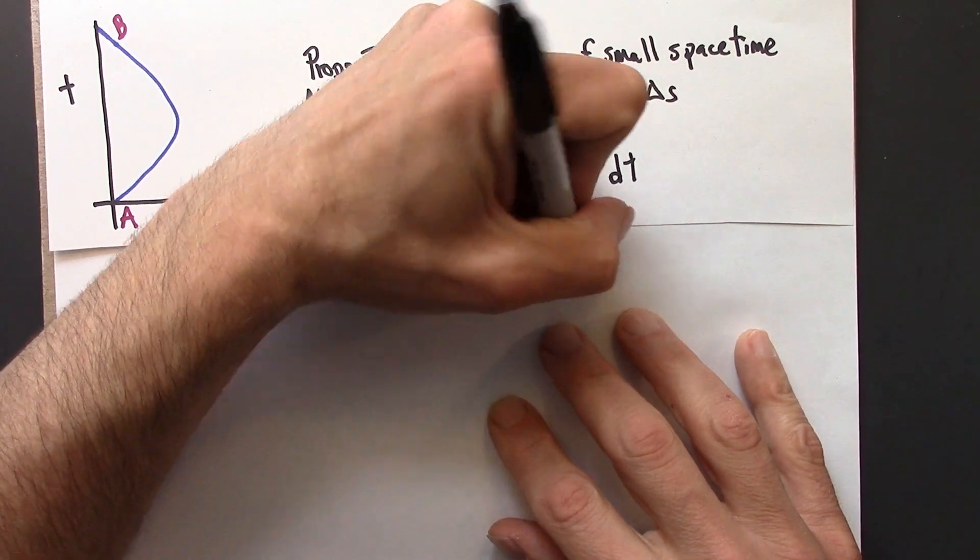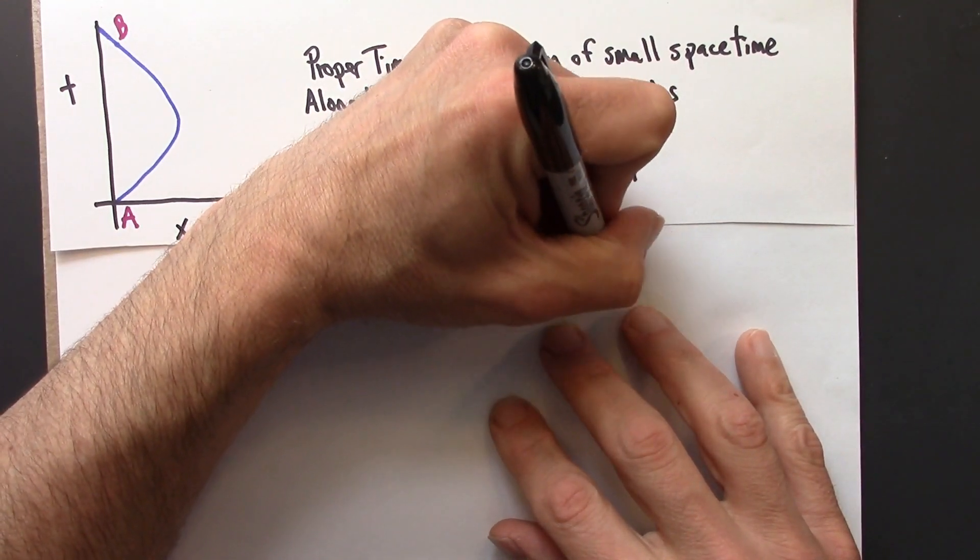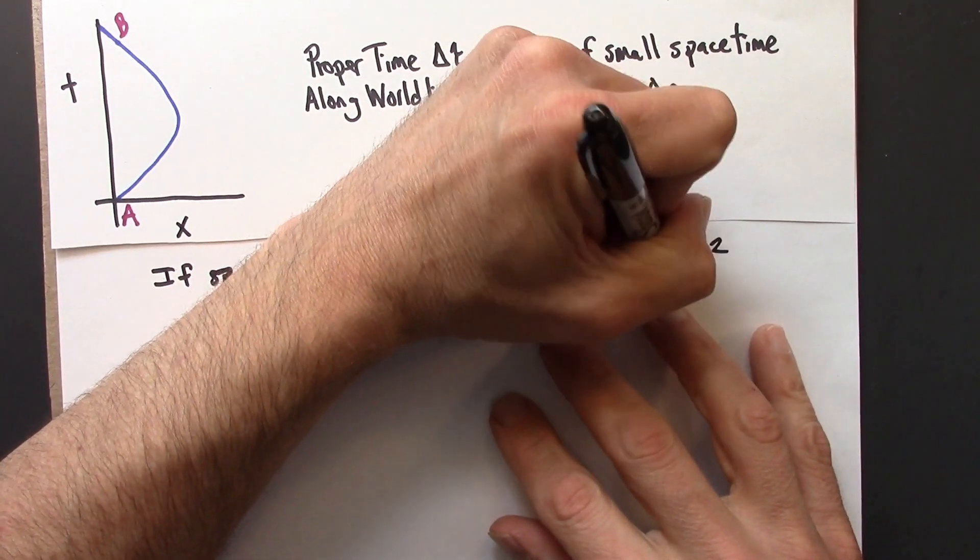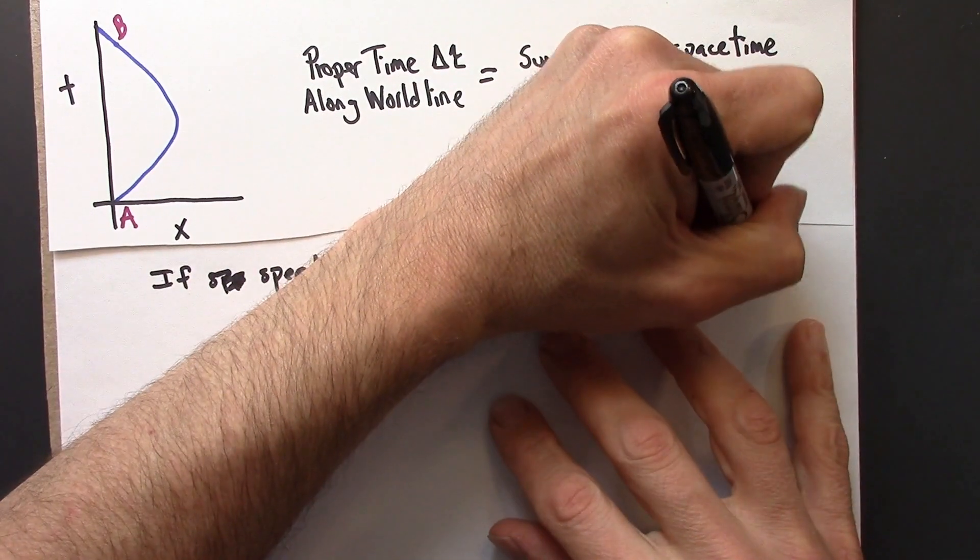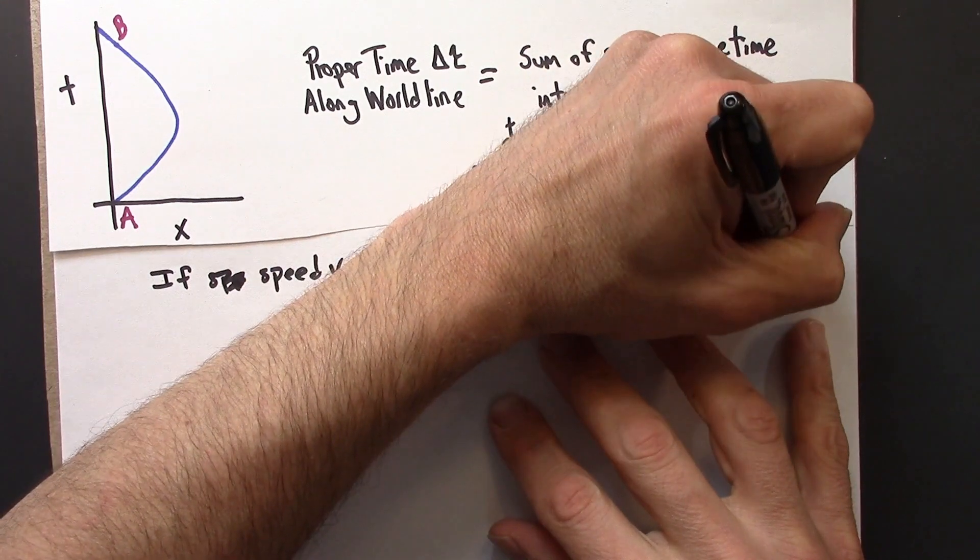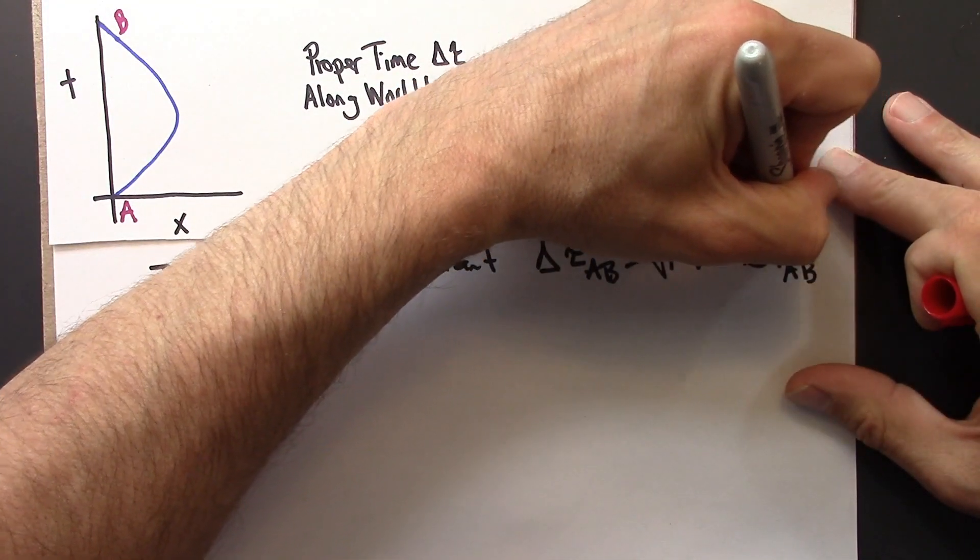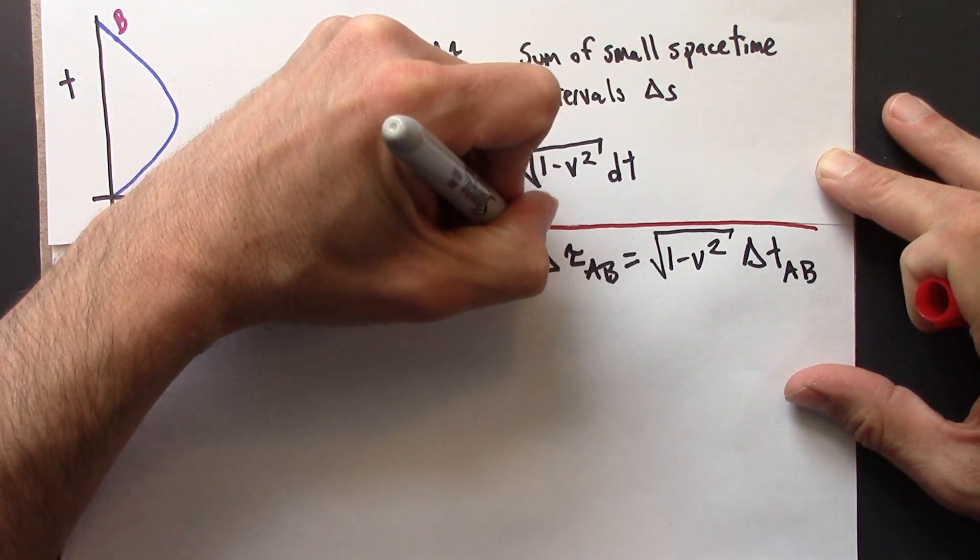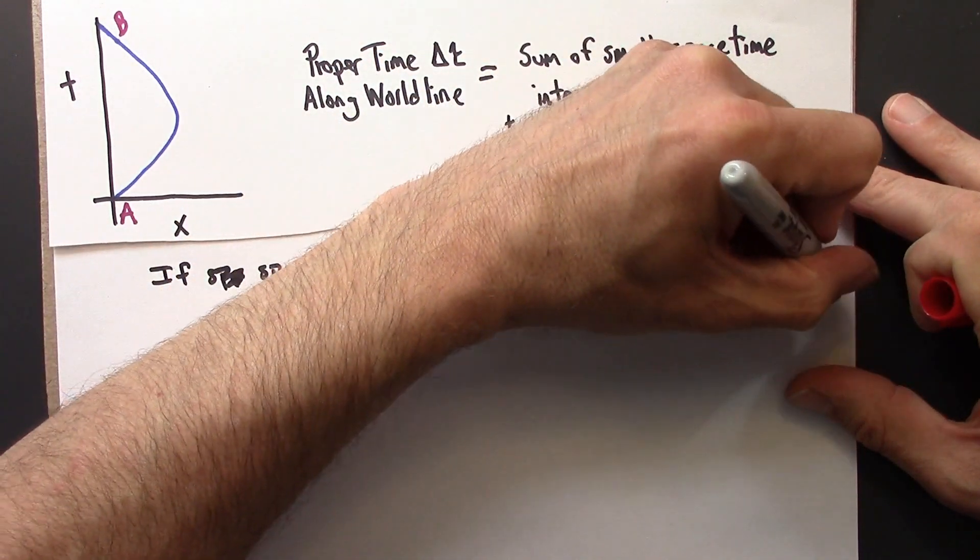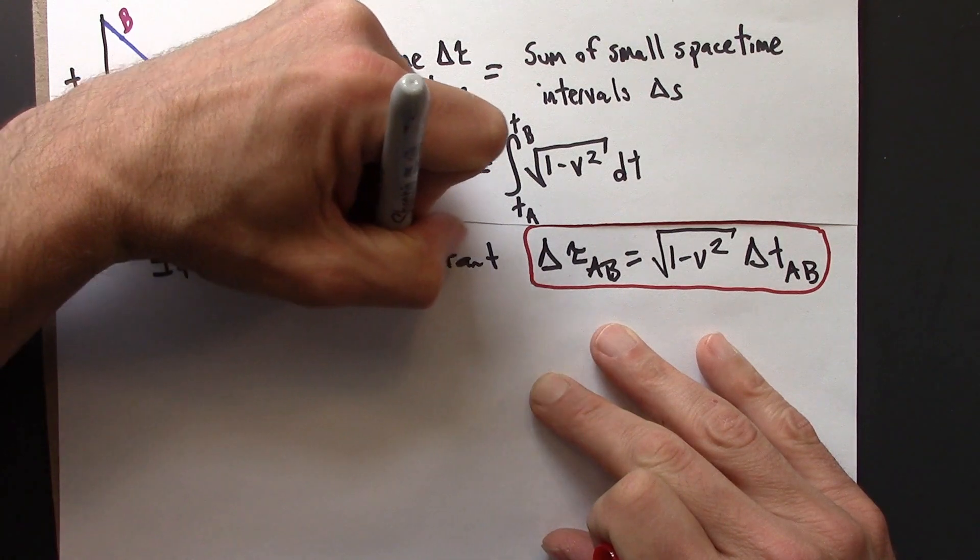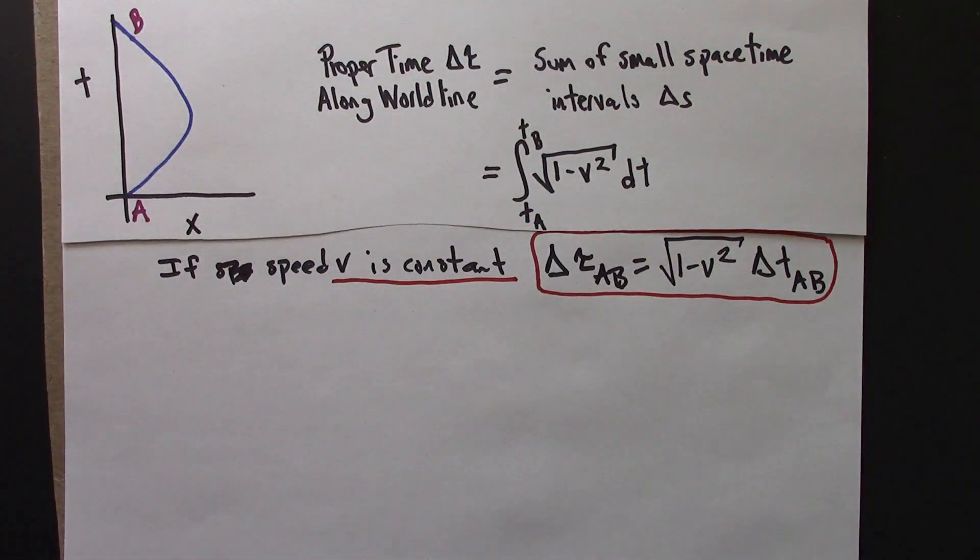Delta tau AB is the square root of 1 minus v squared times delta t AB. So this is an important formula that we use a lot. It deserves a box. And remember that this is only true if the speed is constant.